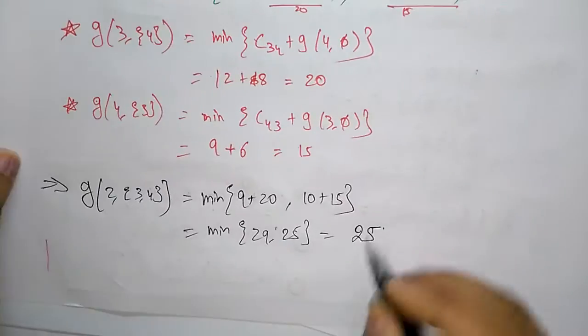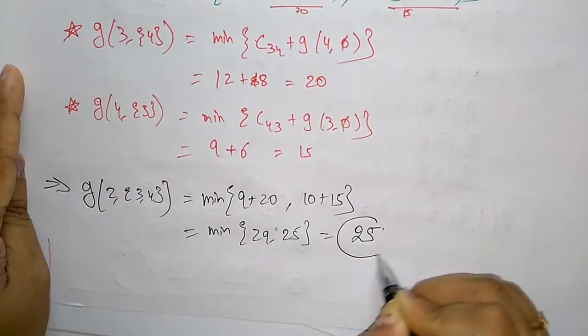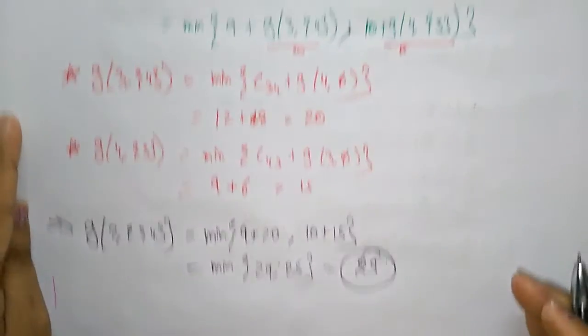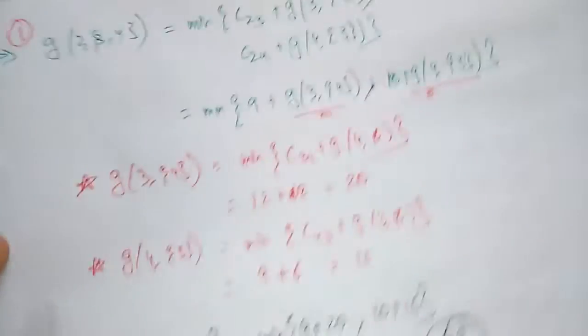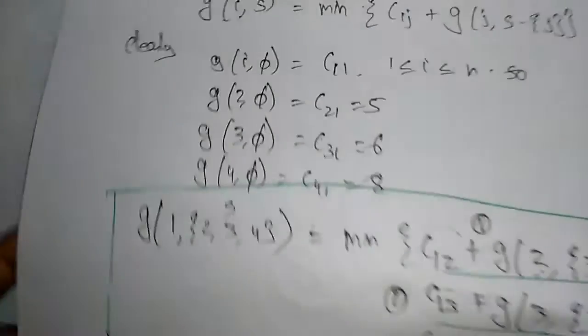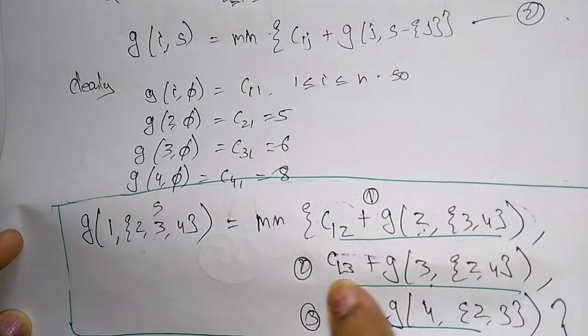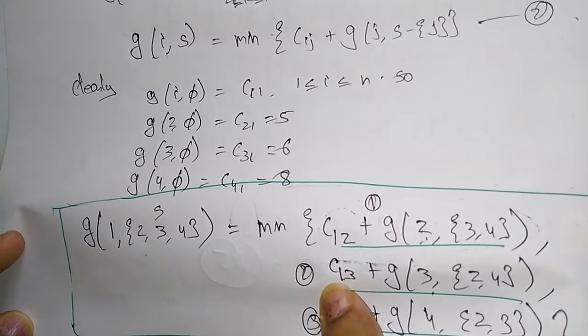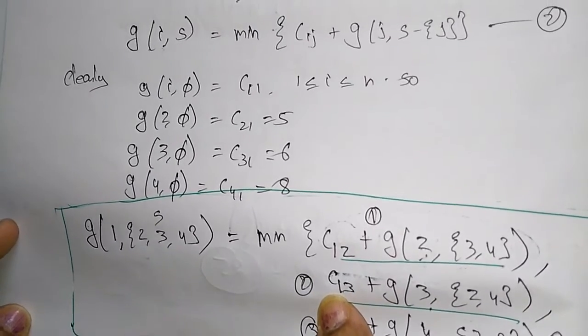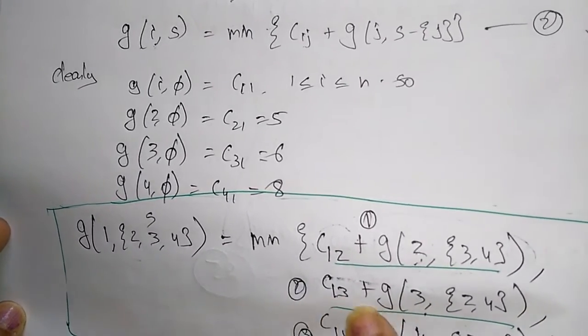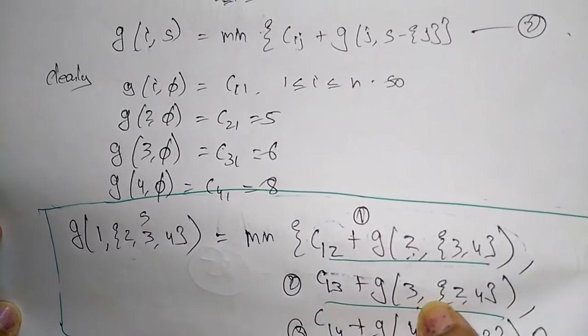For g(2, {3,4}) we get the value 25. Now for the second equation, c13 we already know from the given adjacency matrix. We have to calculate g(3, {2,4}). Now let us start the second equation.